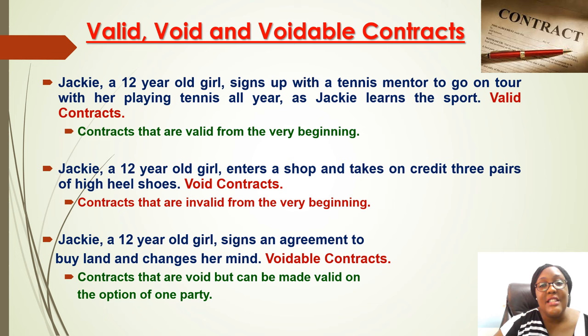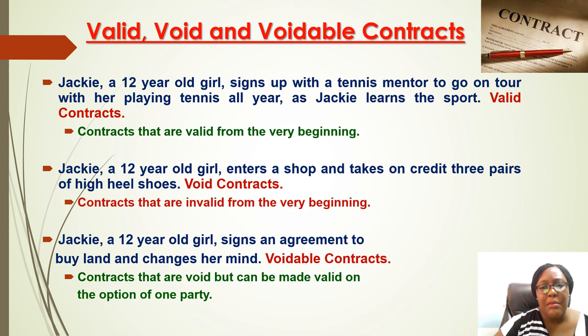A voidable contract is one that is void unless either party makes it valid. For example, the minor Jackie enters into a contract to buy land, then changes her mind. She has the right to reverse her decision and make the contract valid. So a voidable contract is cancelled unless one party makes it valid. To summarize: void — not existing; valid — existing; voidable — not existing unless one party makes it valid.